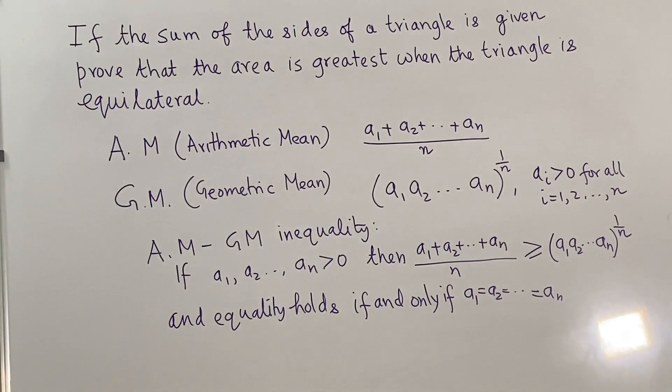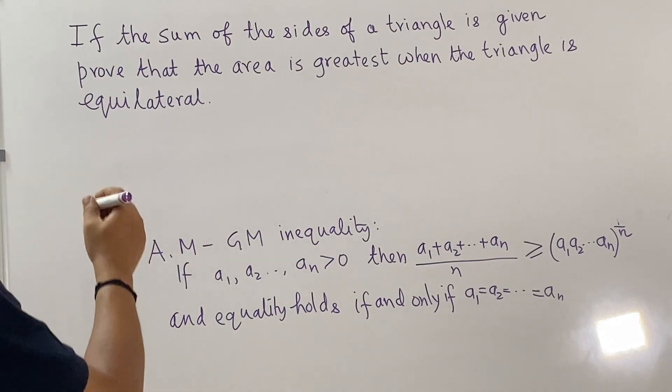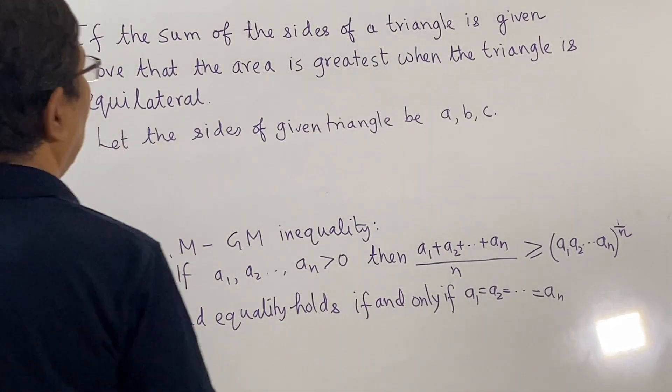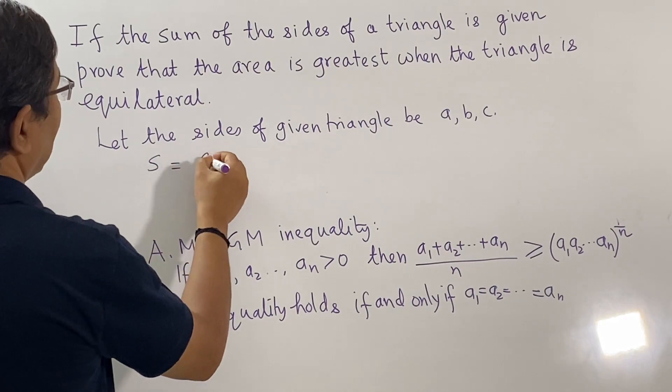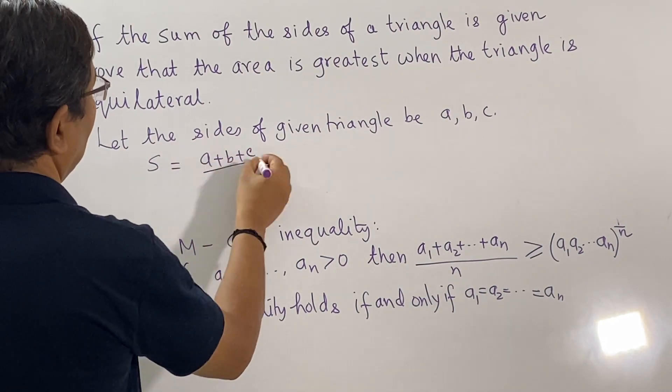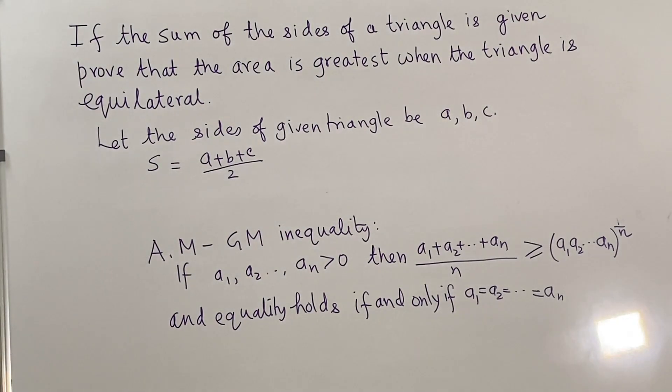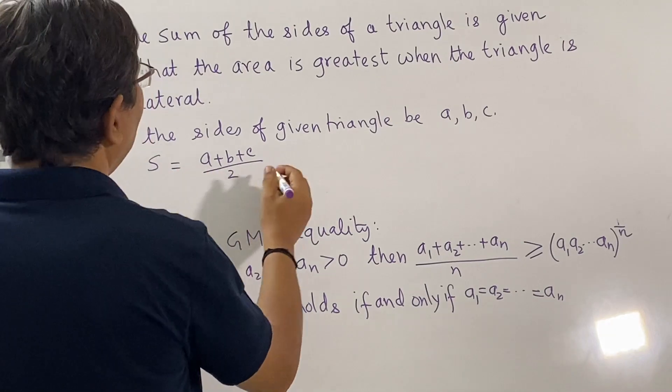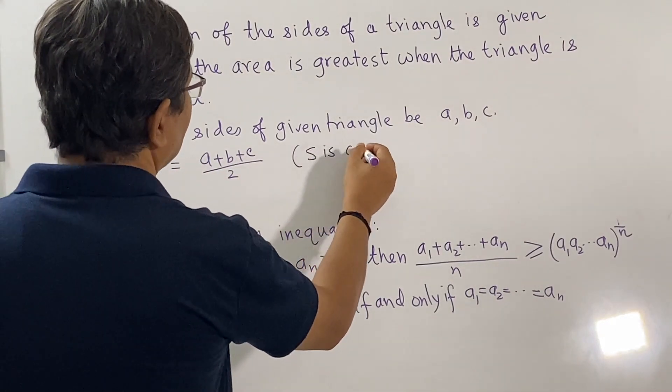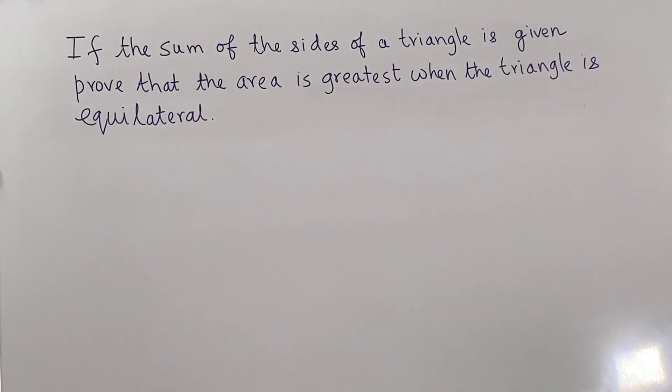This is a very well-known inequality which can be applied in various situations giving spectacular results. And we will use this inequality to prove this result about triangles with a given perimeter. So let the sides of the triangle be A, B, C and S be the semi-perimeter which is A plus B plus C by 2. Since the perimeter is constant, therefore the semi-perimeter is also a constant. Let us apply the AM-GM inequality to prove this result.